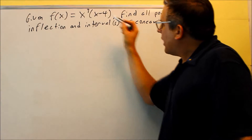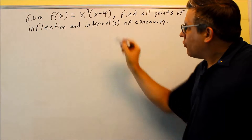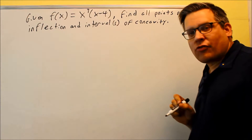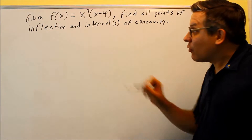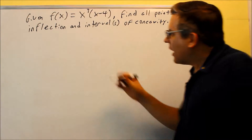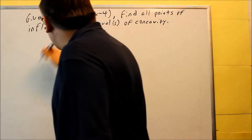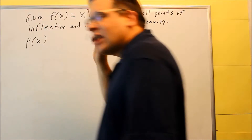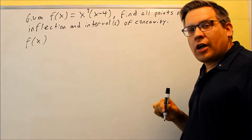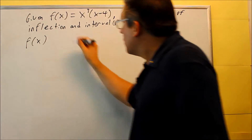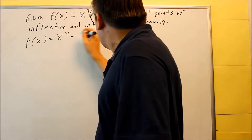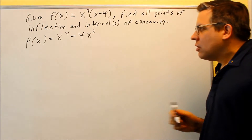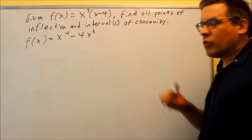Before I jump into starting to take the derivative, what I'm going to notice here is I can multiply and distribute first, because that way I can avoid using the product rule. So the first thing I'll do before I take any derivatives will be to multiply and distribute: x to the fourth minus 4x cubed. That's going to be the same as the original.